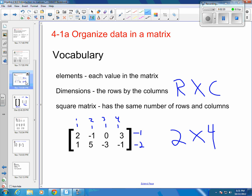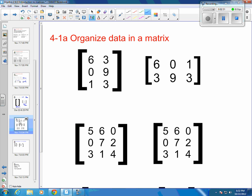Okay, so again, we've got our elements, which is each value in the matrix, our dimensions, which are always given rows, then columns. And then a square matrix. Square matrix just means you've got the same number of rows as columns. So if I look down here, this one here would be a square matrix. It's a 3 by 3. Okay, so 3 by 3 would be a square matrix.